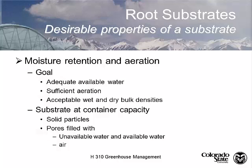Another important part of good quality substrates is water retention and sufficient aeration. We need good available water with acceptable wet and dry bulk densities and plenty of air. At container capacity, we've got solid material and pores filled with unavailable water. Unavailable water is water the plant cannot extract — less than 15 bars, the permanent wilting point. So you have unavailable water, available water, and air. Your root system has to have air.